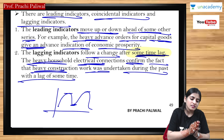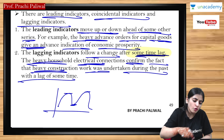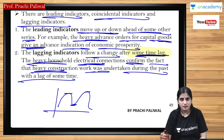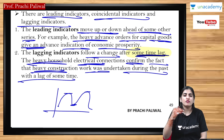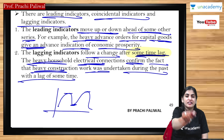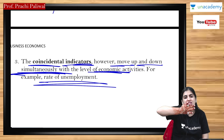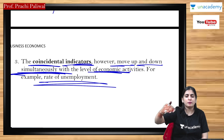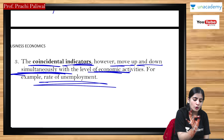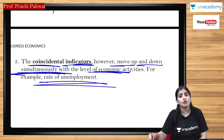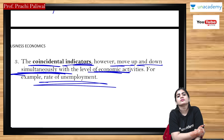To summarize: leading indicators help you predict the future based on a present event; lagging indicators show future indication based on something that happened in the past with a time lag; and coincidental indicators are things going on simultaneously with which you can predict trends.